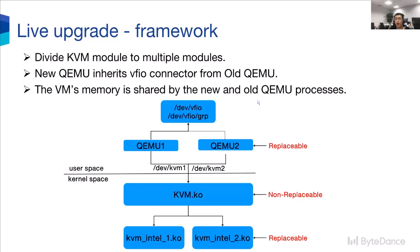This is the framework for Live Upgrade. In order to live upgrade KVM, we modify the KVM module and allow it to be compiled into multiple modules named KVM1 module, KVM2 module, and so on. The specific implementation is that we move most of the KVM module functions into a KVM-inter module. To load multiple copies of KVM-inter modules, we associate all the original global variables in KVM-inter module and make all the global functions local.